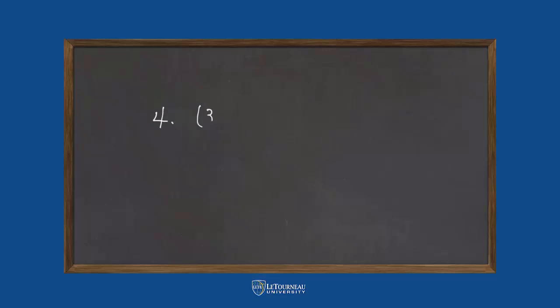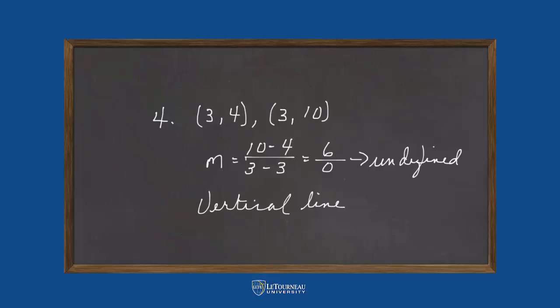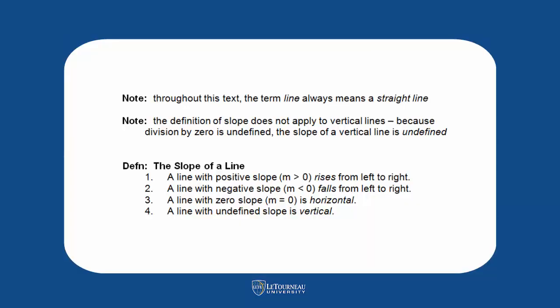We're going to look here at another example. In this case, notice, the x values of the points are the same. So we have 10 minus 4 over 3 minus 3, 6 over 0. Undefined. We can't divide by 0. We have a vertical line. Please, never say that there's no slope. It's undefined.